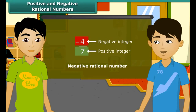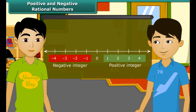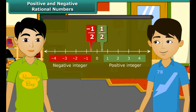How do we represent a rational number on a number line? Points on the right side of 0 are positive integers, and points on the left side of 0 are negative integers. Let's mark 1 by 2 on this line — 1 by 2 will lie in between 0 and 1. And minus 1 by 2 will lie in between 0 and minus 1.